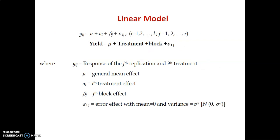We will see the linear model of RBD, that is, the mathematical model. So y_ij — where y is always yield — equals mu plus treatment effect plus block effect plus epsilon_ij. Epsilon_ij always follows the error effect with mean 0 and variance sigma squared, which follows a normal distribution N(0, sigma squared). That element takes all the error into consideration. Our response y_ij is the response of the j-th replication and i-th treatment. Mu is the generalized mean effect (a constant), A_i is the i-th treatment effect, and beta_j is the j-th block effect.